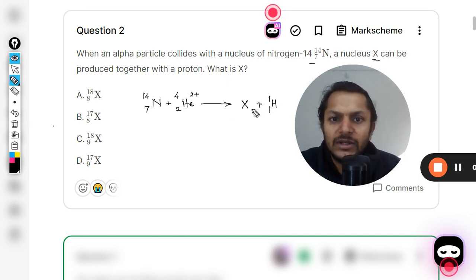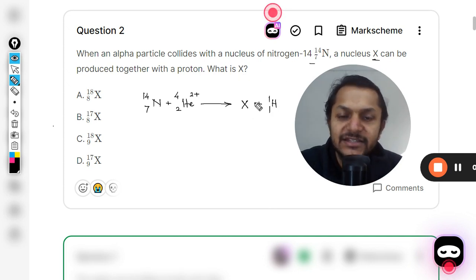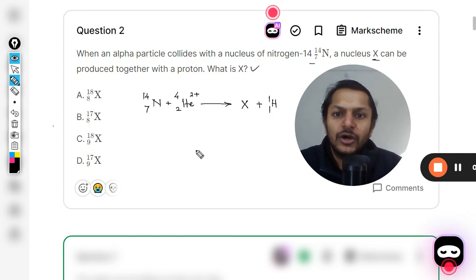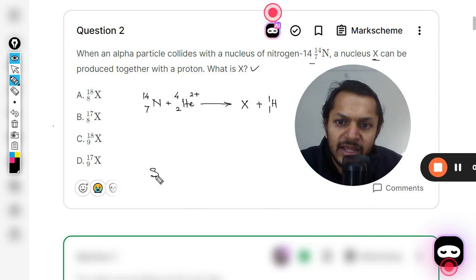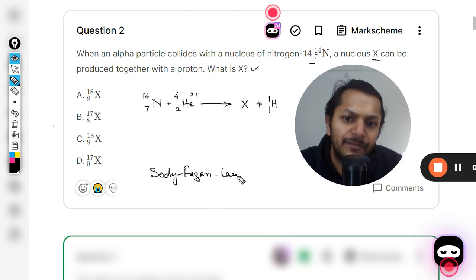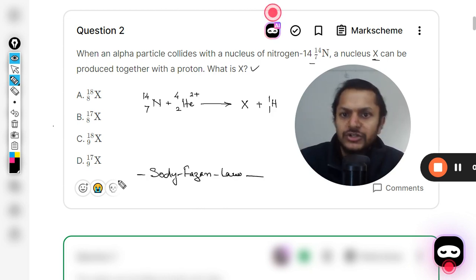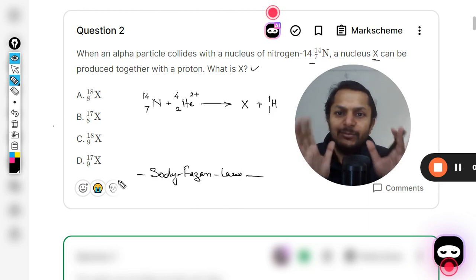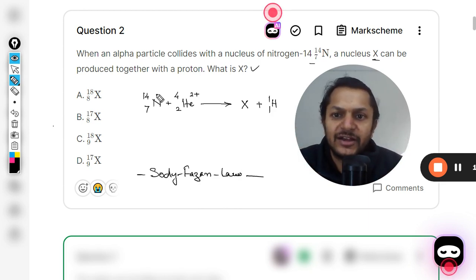Now what kind of nucleus is this? This is what they are asking. So there is a rule named Soddy-Fajans rule. You might be knowing this already, but this is not talked about in your books. Soddy-Fajans rule is a simple rule that even in nuclear reactions...